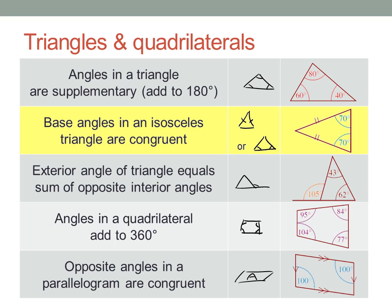Can you see how to use these first two rules to work out both the other angles in an isosceles triangle if you only know one of them?